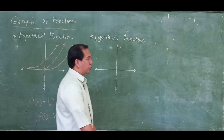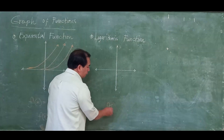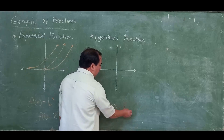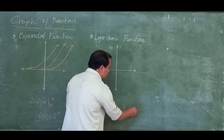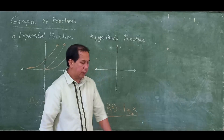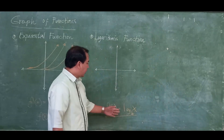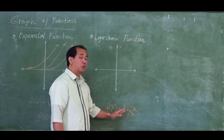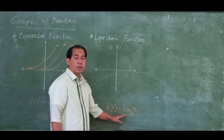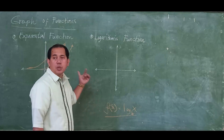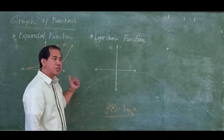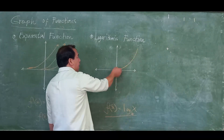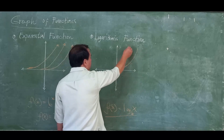The logarithmic function can be stated as log base d of x. If you see the word log, it is considered to be a logarithmic function. It is just the opposite of the exponential function, and so its graph follows the same general style but mirrored.